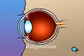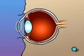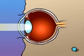Astigmatism occurs when the cornea is unevenly curved, causing light rays to fall off-center or not to focus properly at all.